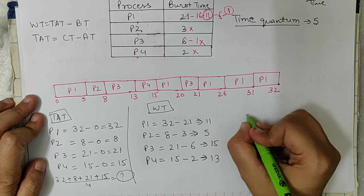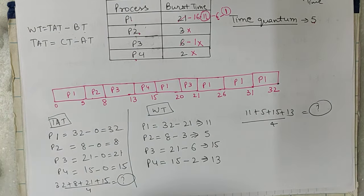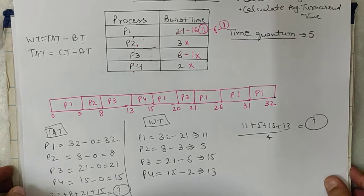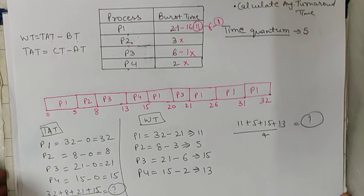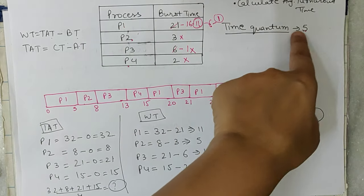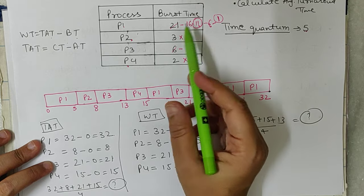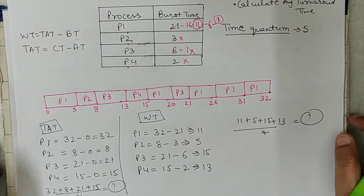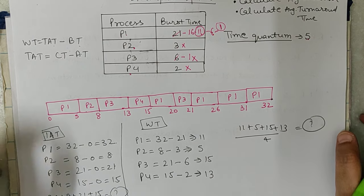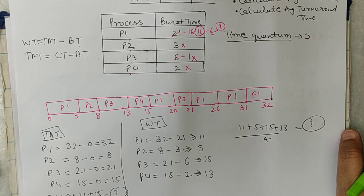Average wait time is 11 plus 5 plus 15 plus 13 divided by 4. This is how we calculate the average wait time and average turnaround time for Round Robin. In Round Robin, we give processes CPU access in slots of the time quantum — here 5 minutes. If a process has remaining time, it goes back to the end of the queue and waits for its next slot. Thanks for watching, please subscribe and like the channel!